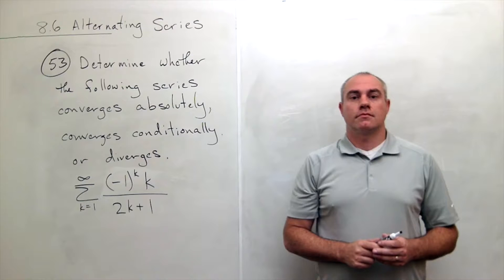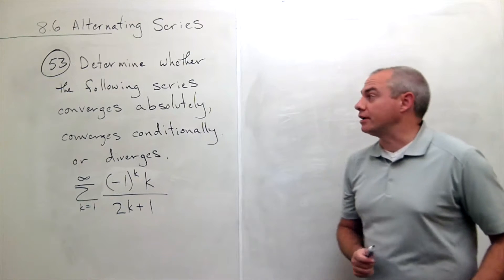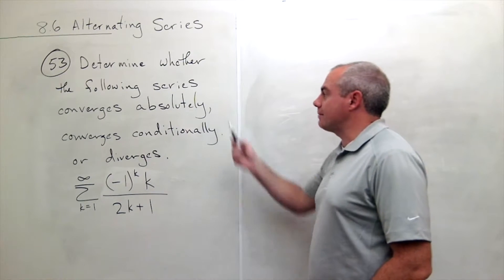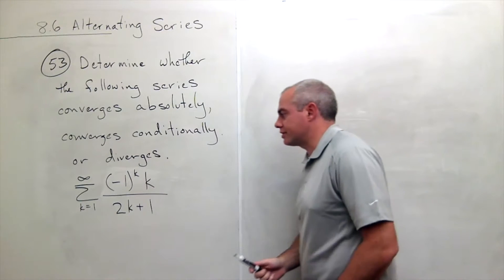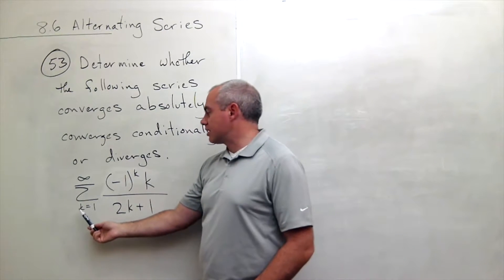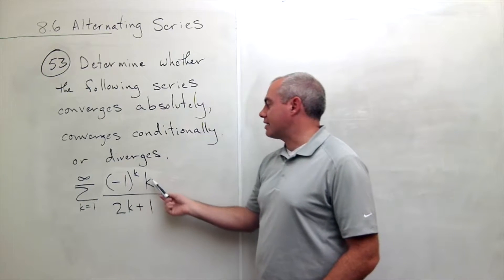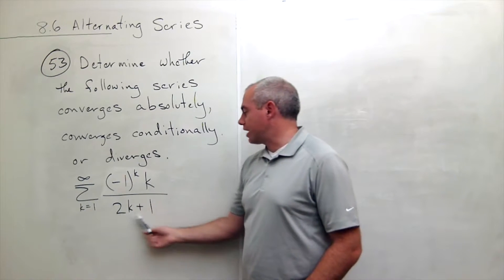I'm the calculus professor, and today I'll be talking to you about alternating series. In problem number 53, we'd like to determine whether the following series converges absolutely, converges conditionally, or diverges. The series is sum k going from 1 to infinity of negative 1 to the k times k over 2k plus 1.